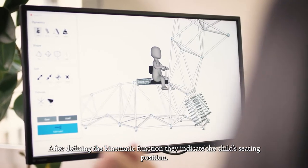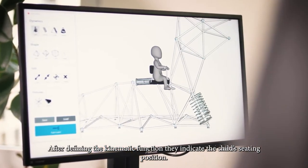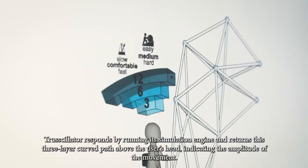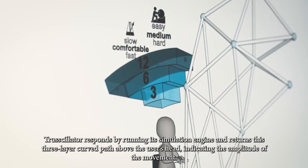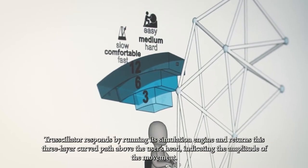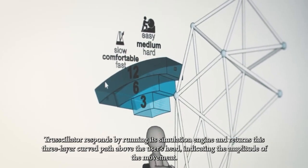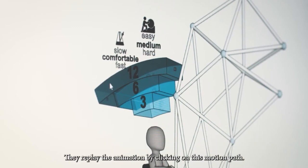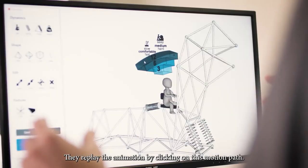After defining the kinematic function, they indicate the child's seating position. Trussillator then responds by running its simulation engine and returns this three-layer curved path above the user's head indicating the amplitude of the movement for three age groups. They replay the animation by clicking on this motion path.